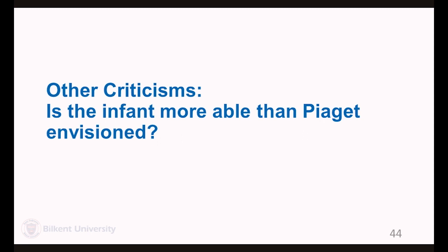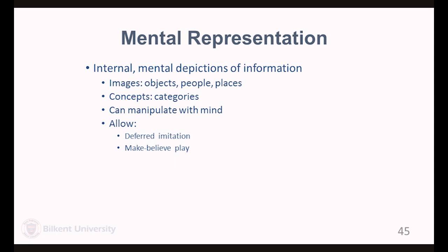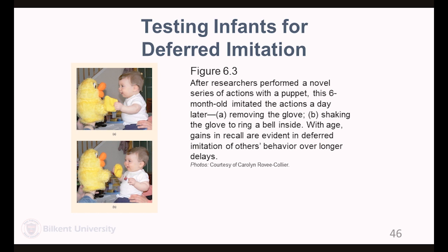Is the infant more able than Piaget envisioned? Most likely. So many criticisms relate to mental representations. According to Piaget, mental representations happen towards the end of the sensorimotor period, marking the shift to the pre-operational period. We see evidence in deferred imitation and symbolic play and the beginnings of language. But other research, looking at the timing of deferred imitation, suggests it happens earlier.